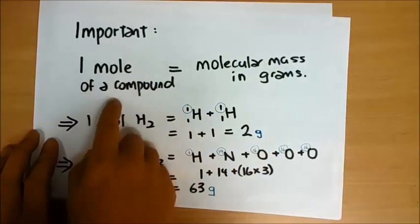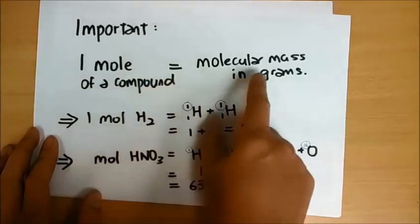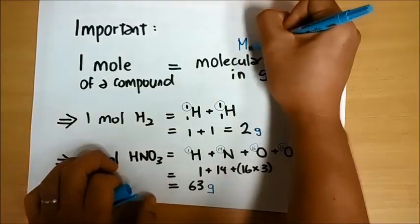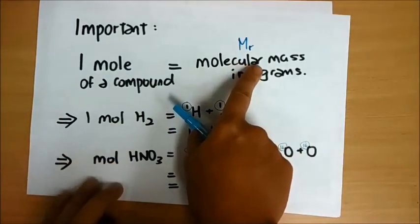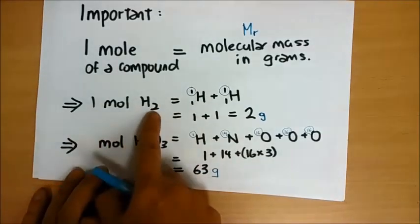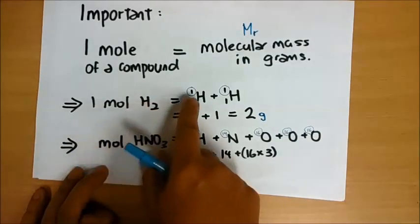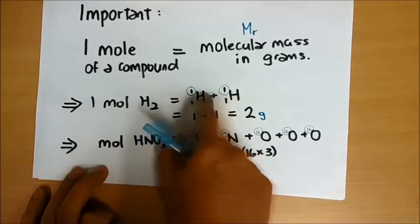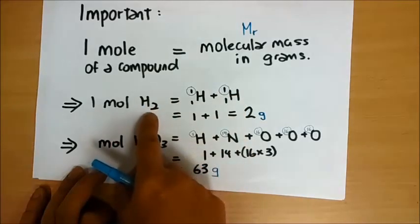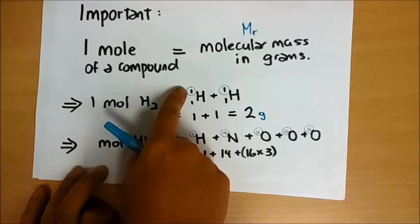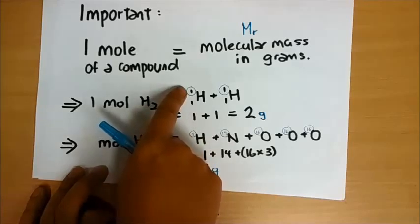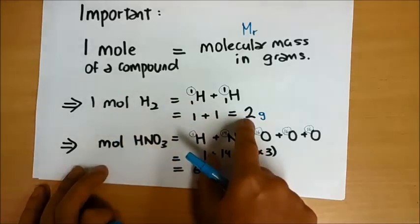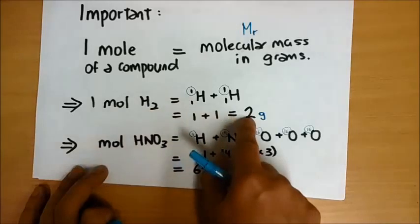It's important to understand that one mole of a compound is simply the molecular mass in grams. The molecular mass is sometimes represented by MR. So if I want to find one mole of hydrogen gas, that means the sum of two atoms in one mole — one unit. I take the mass number on top, so one plus one gives me two grams. One mole of H2 will be two grams.